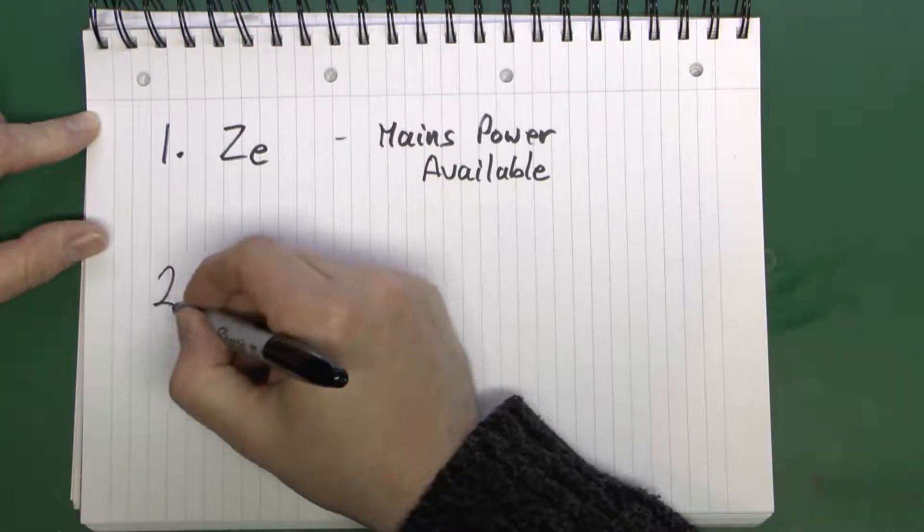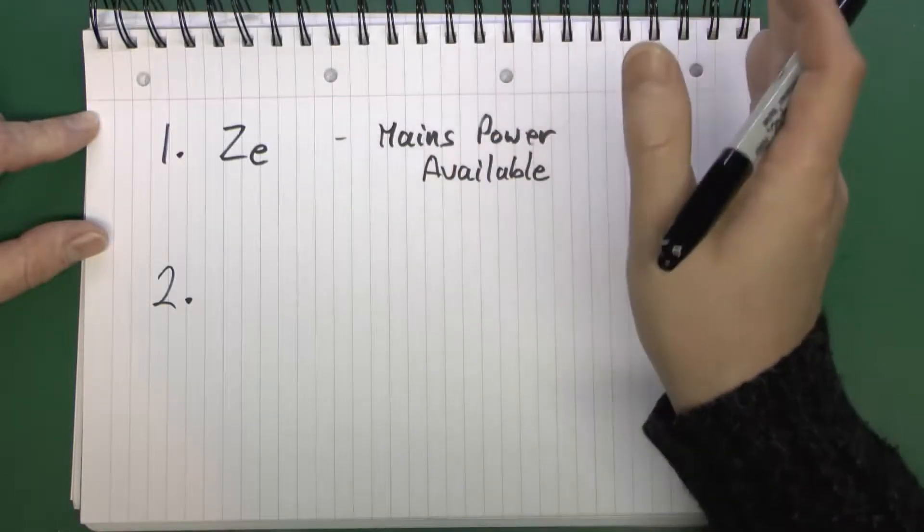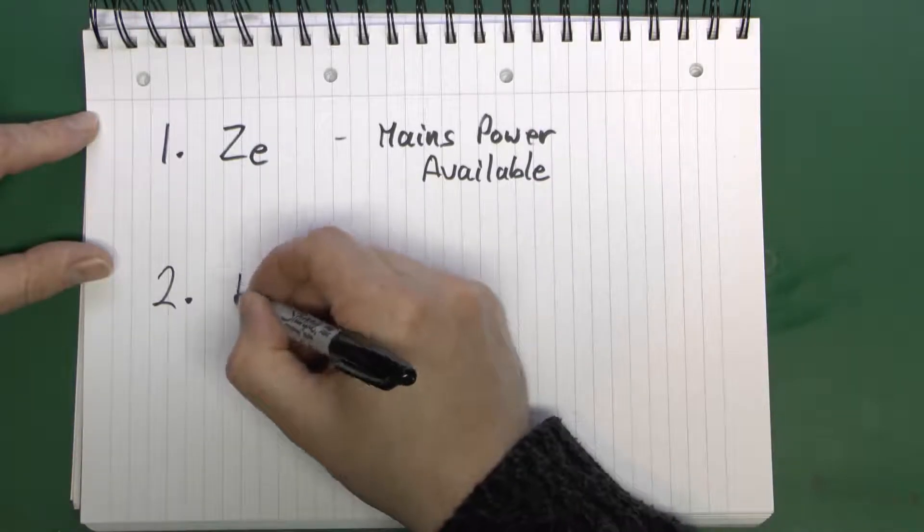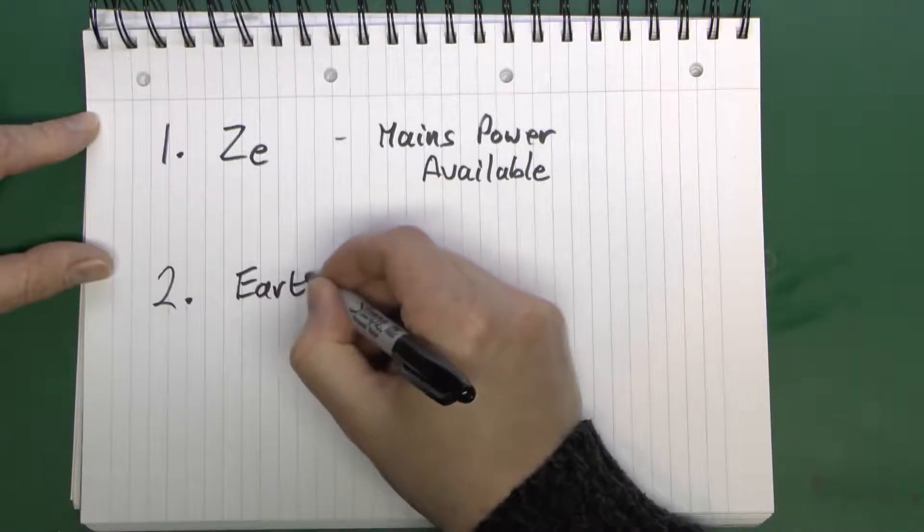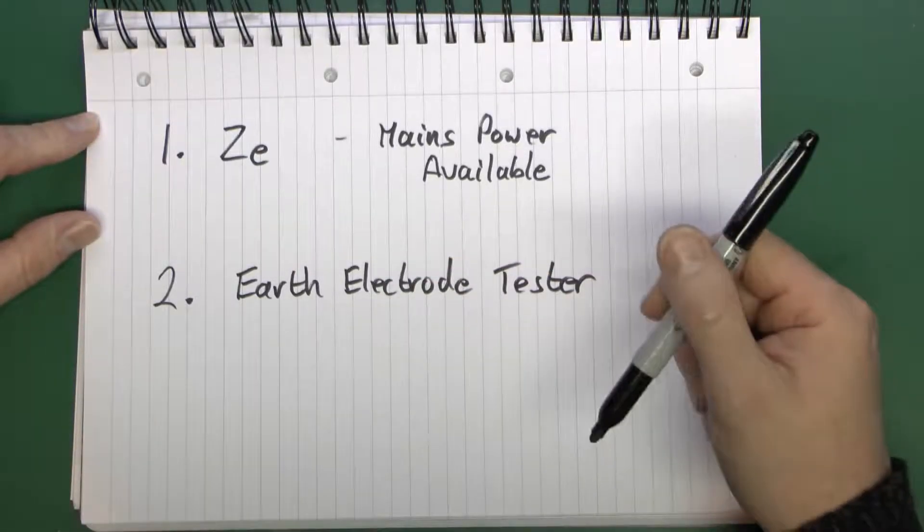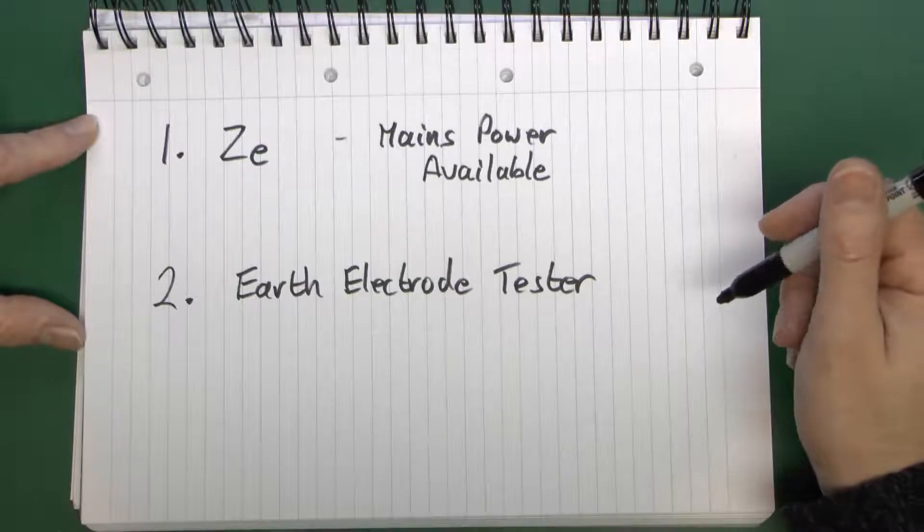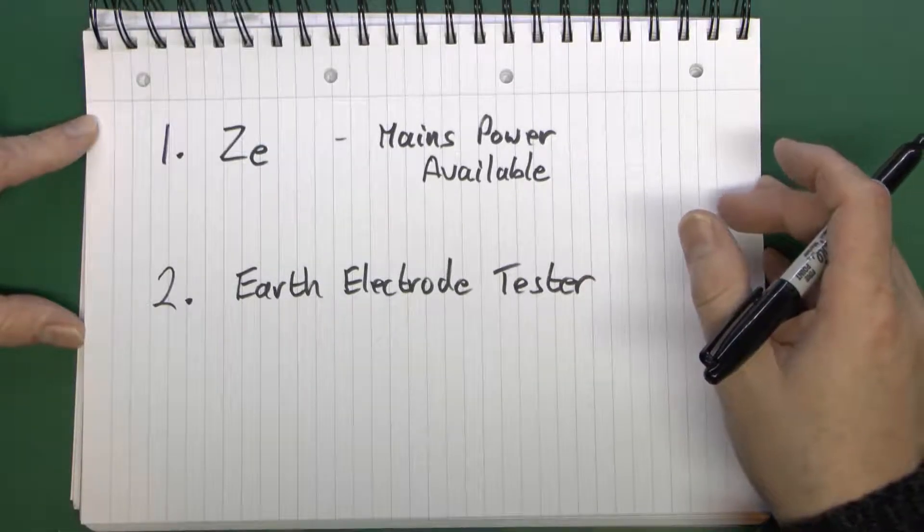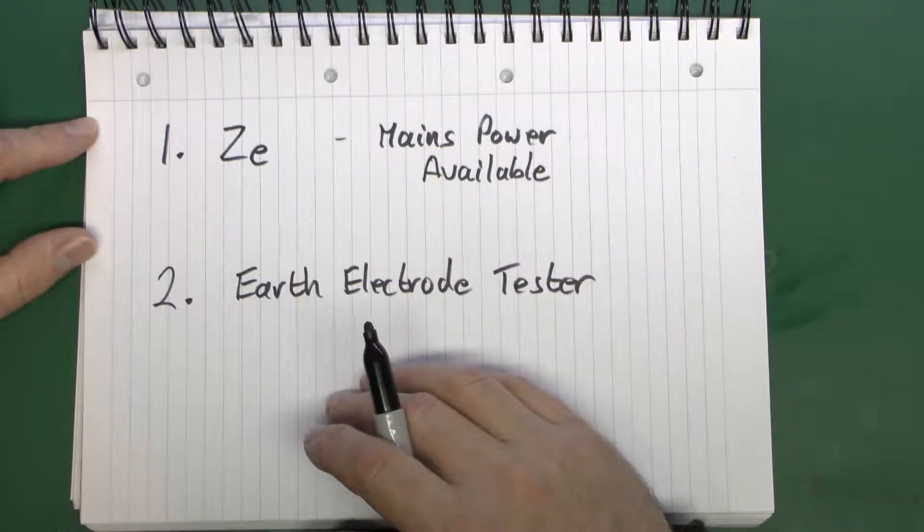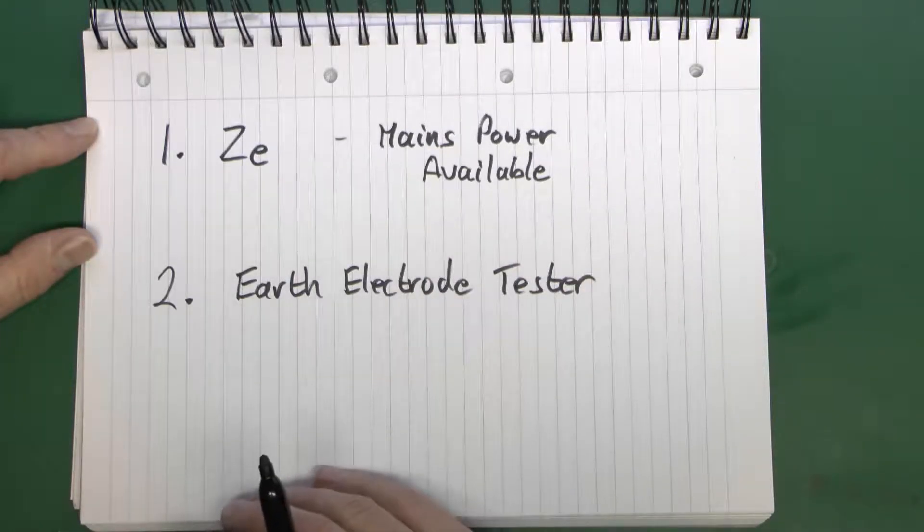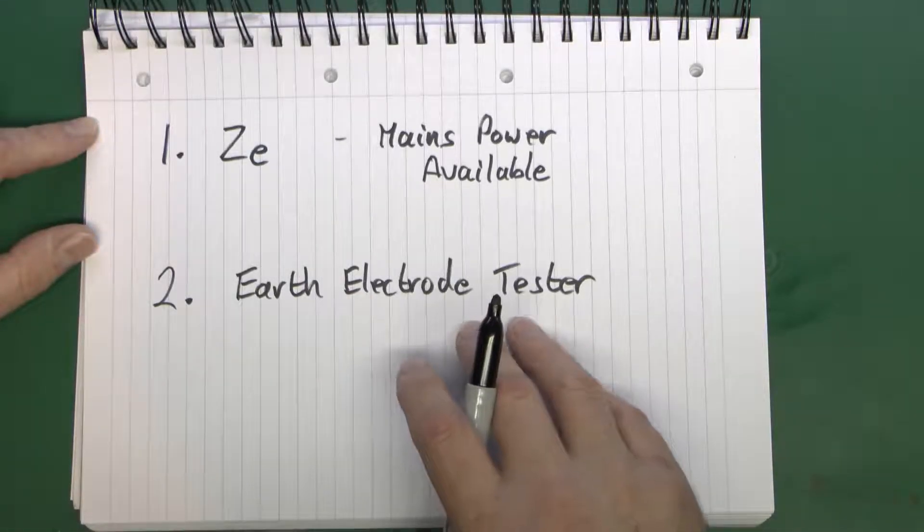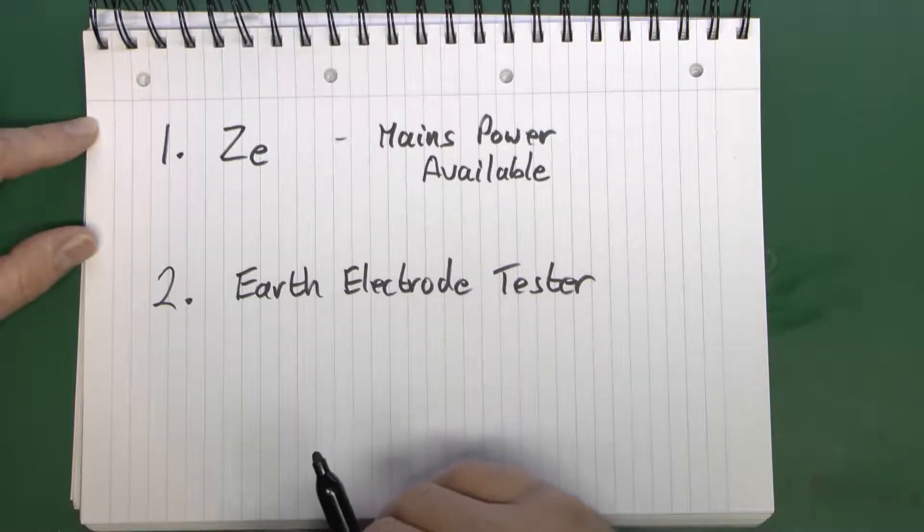In the case that power is not available, which certainly would be if there was a new installation and power hadn't been connected yet, the alternative method is to use an actual earth electrode tester. This does not require any mains power, it's battery operated, and can be done whether there's mains power available or not. This takes considerably longer and you do need the specific piece of test equipment to do it with.